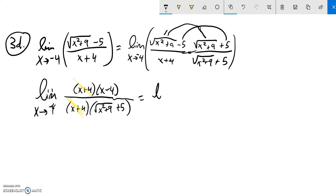So that leaves me with the limit as x approaches negative four of x minus four over, and then what's left down here, square root of x squared plus nine plus five. And now I can plug negative four into here, and I'm just fine.